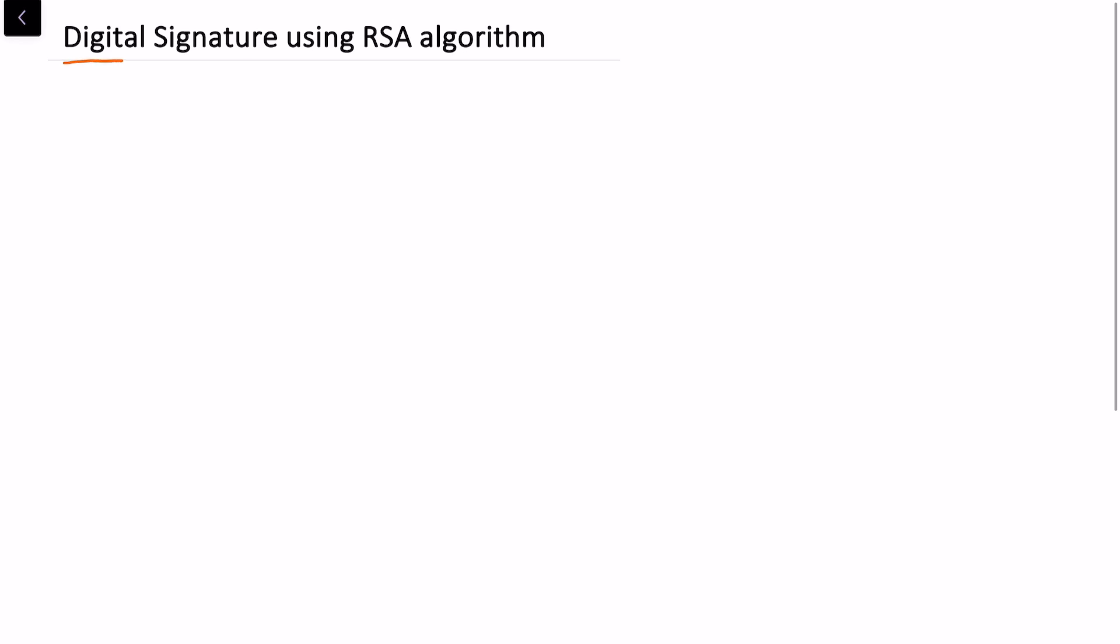In this video we'll be talking about digital signature using RSA algorithm. Let's take an example to understand what digital signature is. Let's say Alice applies for an insurance. Alice wants to apply for an insurance, so this is an insurance document and Alice applies to the agent Bob. Bob negotiates with Alice on this insurance document.